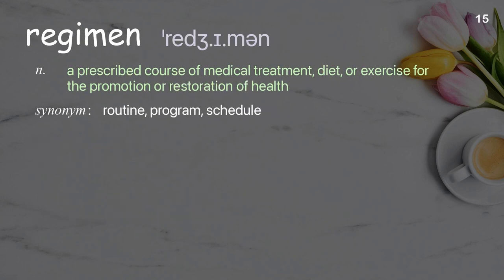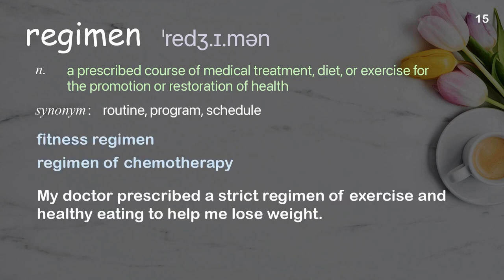Regimen: a prescribed course of medical treatment, diet, or exercise for the promotion or restoration of health. Examples: fitness regimen, regimen of chemotherapy. My doctor prescribed a strict regimen of exercise and healthy eating to help me lose weight.